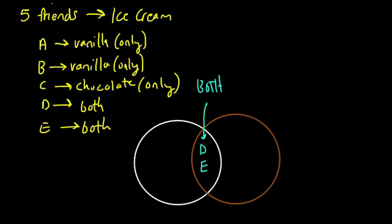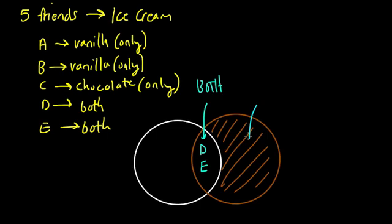And then here, on the right-hand side, this is our chocolate circle. Well, this area of the chocolate circle, D and E are in the chocolate circle still, because they do want chocolate. But they're also in the vanilla circle because they want vanilla. But this area of the chocolate circle is reserved for people who just want chocolate. So this is just chocolate over here. And you can put those people in there. It's one person, C.